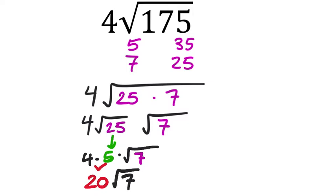I still check on my calculator — 4 times the square root of 175. Enter. Yes, 20 times the square root of 7. So it looks like we did that correct. Is that more work than some of you would show? Perhaps. But is it all good work? Yes, sure. It's good.